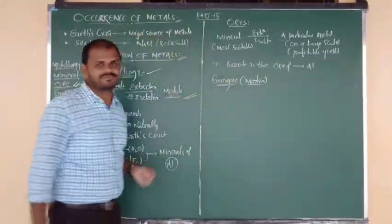The second term we need to focus on is minerals. What is meant by minerals? Minerals are the elements or compounds which occur naturally in the earth crust — which are found naturally from the earth crust. Such elements and compounds are called minerals.